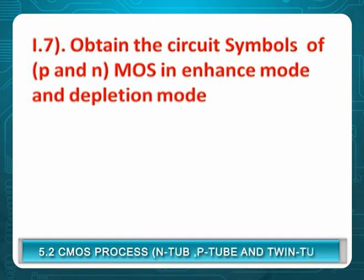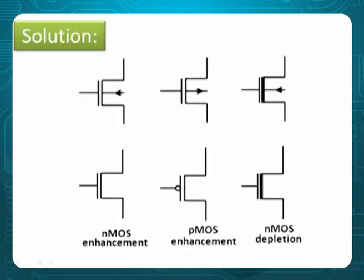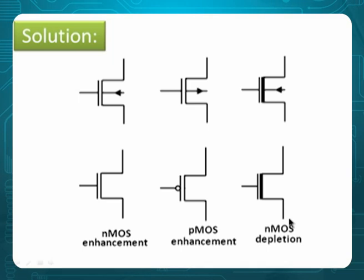Question 7: Obtain the circuit symbols of P-MOS and N-MOS in enhancement mode and depletion mode. For N-MOS enhancement, there is no permanent channel — represented by a dotted or non-thick line. For depletion MOSFET, there is a permanent channel — represented by a thick line. In depletion MOS, a thick or permanent line is used; in enhancement MOS, a dotted line is used.